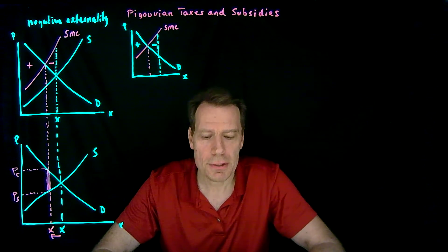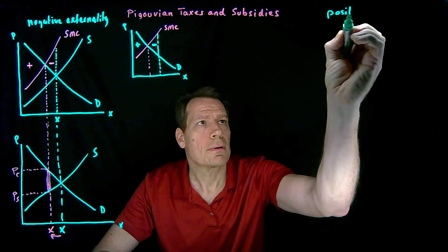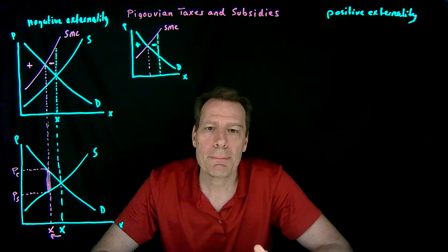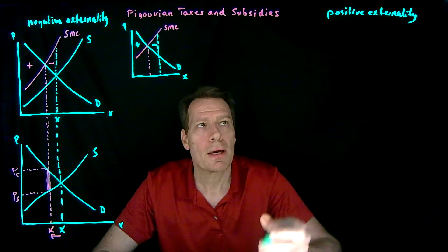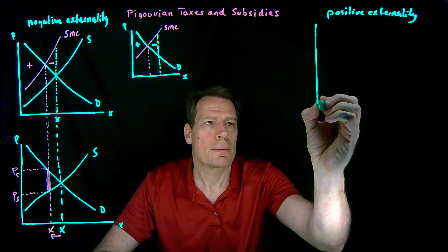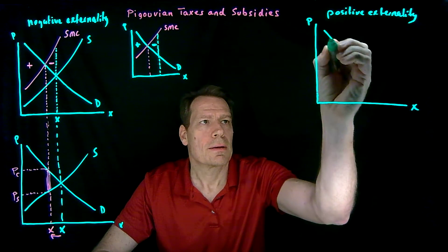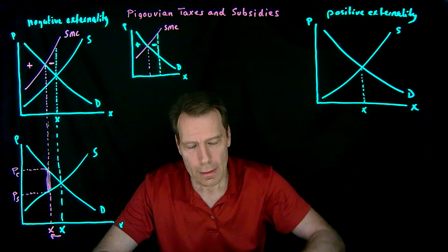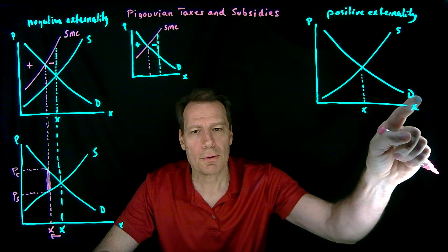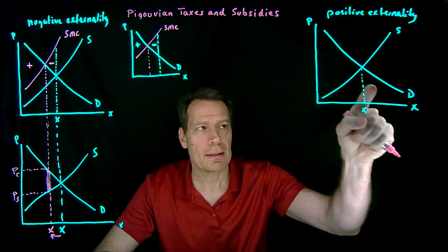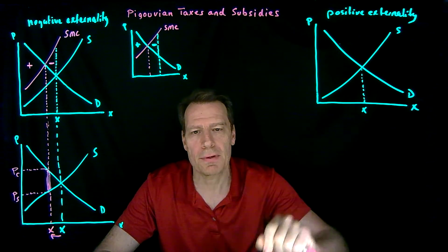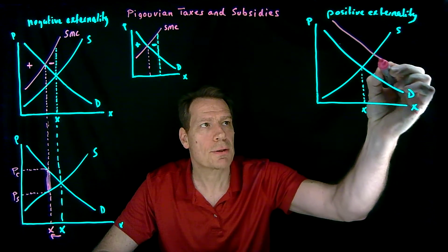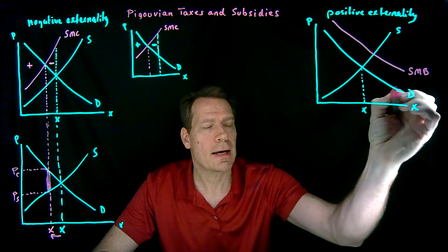Pigou also thought about positive externalities. A positive externality happens when the market participants generate a benefit that's imposed on non-market participants. In that case, we would say here's our demand curve, here's our supply curve, and we know the market produces at the intersection of those. But now the social marginal benefit curve isn't equal to the demand curve, because in addition to the private benefits captured by consumers, there's an additional benefit captured by non-market participants. Adding that additional benefit to the private benefits gives us a social marginal benefit curve that lies above the demand curve.